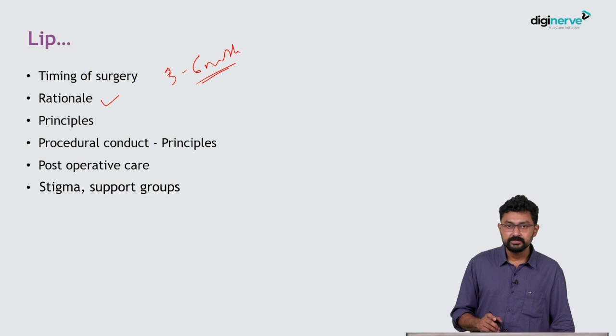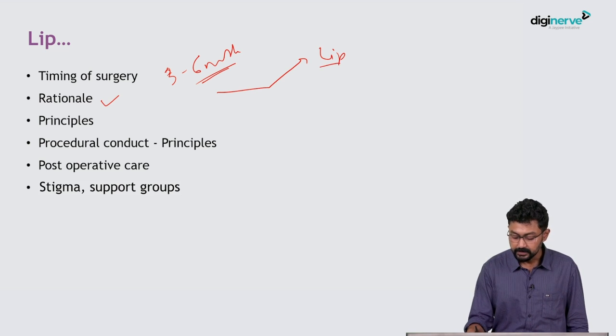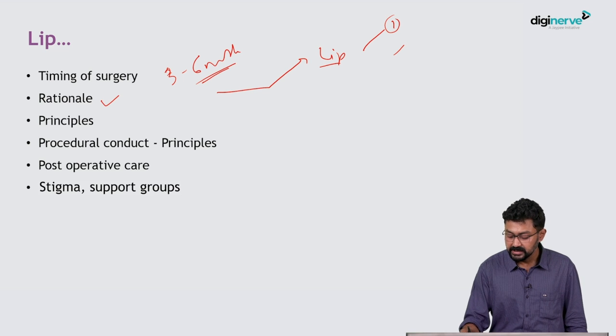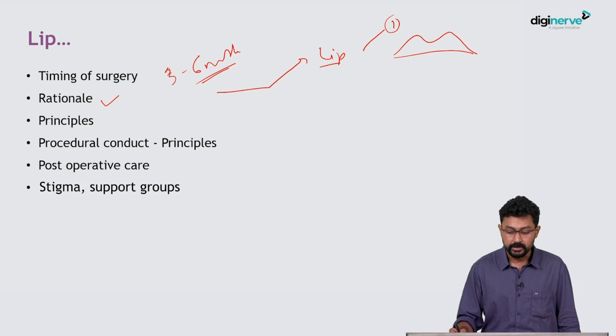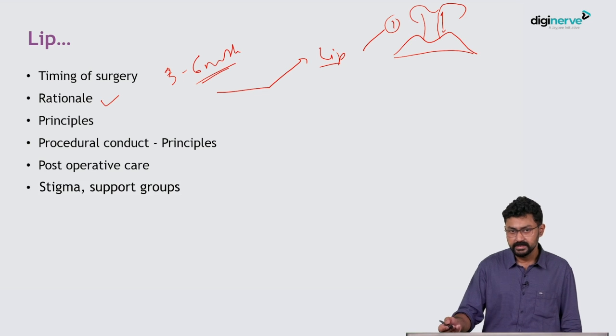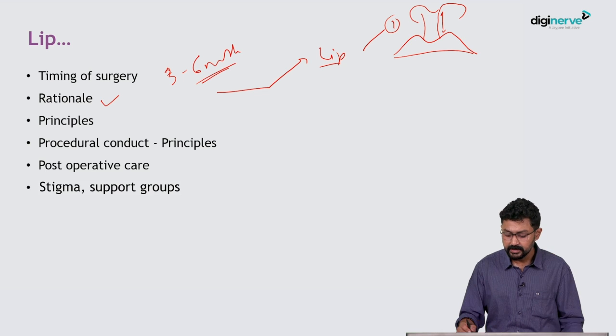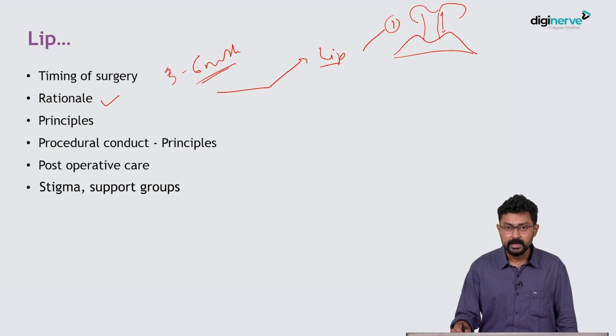The rationale of lip surgery is basically to achieve cosmesis. In terms of lip, what are the principles? First, we have to achieve the Cupid's bow. In upper lip cleft, the Cupid's bow is distorted, so the plan is to restore the Cupid's bow. To achieve the columellar height—the height of these two columns should be symmetrical. And to achieve a proper nose, because nares in these children usually are very asymmetric. As we have seen, in the disease side the alar is flattened out, the columellar deviation is there.